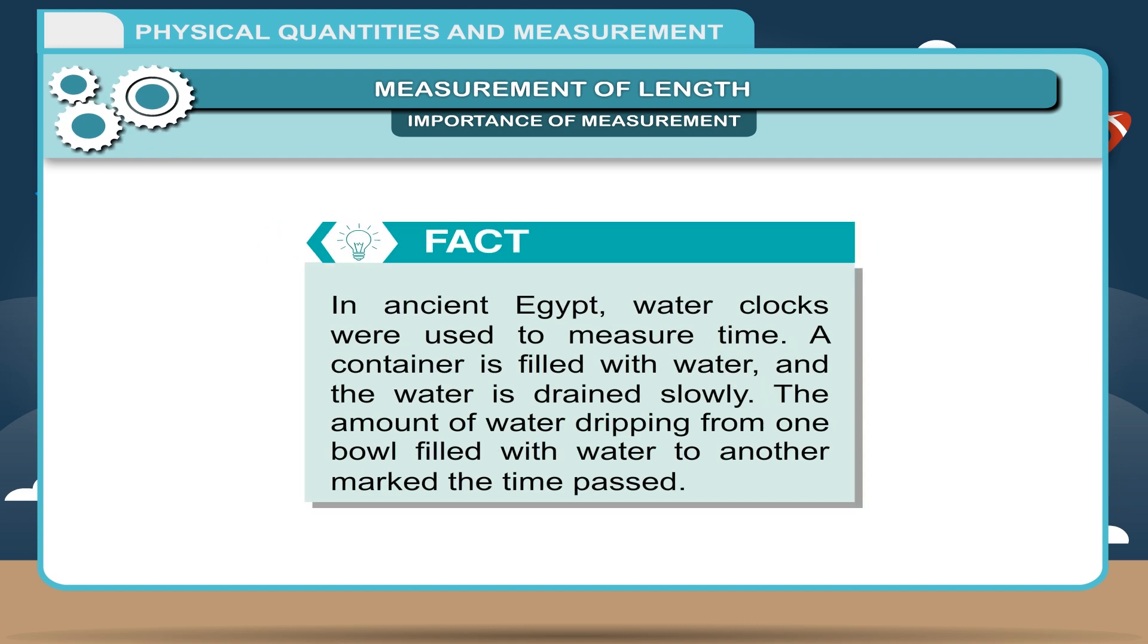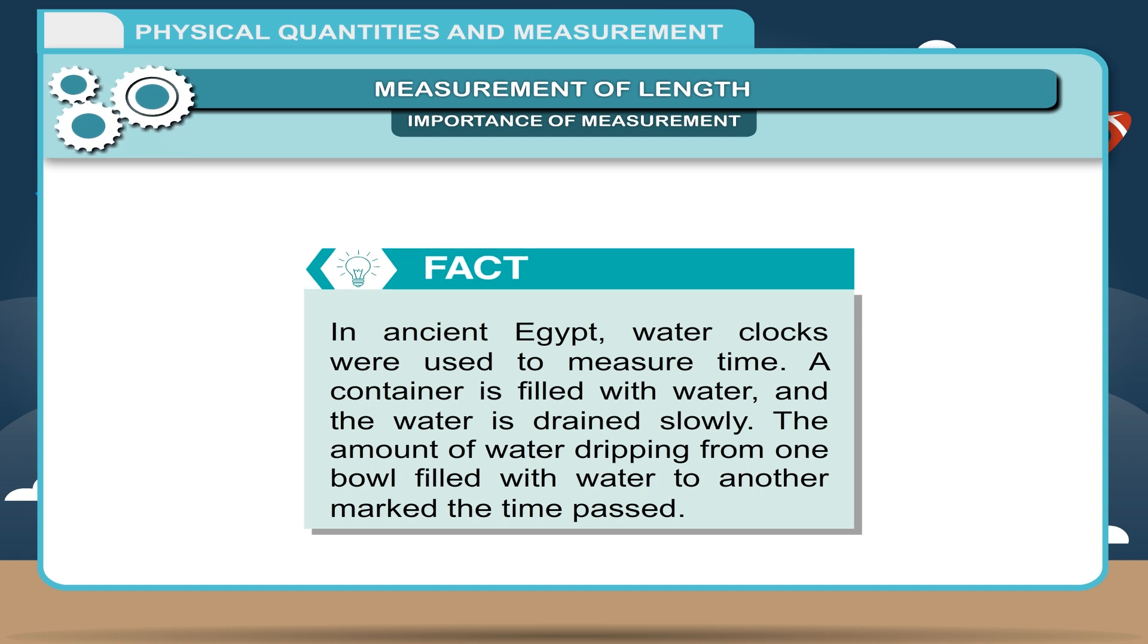Fact: In ancient Egypt, water clocks were used to measure time. A container is filled with water and the water is drained slowly. The amount of water dripping from one bowl filled with water to another marked the time past.